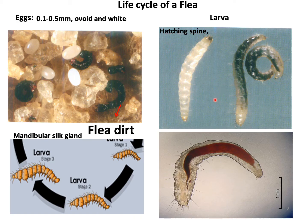There are different developmental stages in the life cycle of a flea. After mating, the female lays eggs that are very small — 0.1 to 0.5 millimeters in diameter — ovoid and quite white in color. These eggs hatch into larvae with the help of a hatching spine, and these larvae are legless and eyeless.